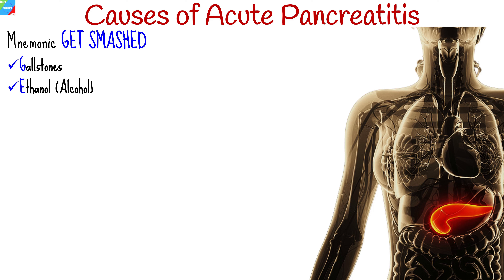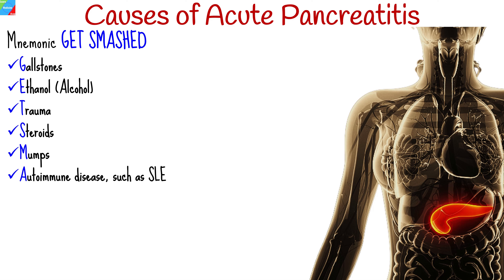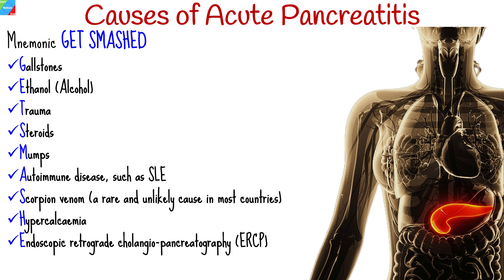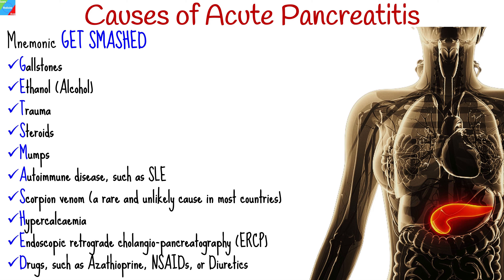E for ethanol or alcohol consumption. T for trauma to the pancreas. S for steroid use. M for mumps. A for autoimmune diseases such as systemic lupus erythematosus. S for scorpion venom, which is very rare. H for hypercalcemia. E for endoscopic retrograde cholangiopancreatography. D for drugs such as azathioprine, non-steroidal anti-inflammatory drugs, or diuretics.